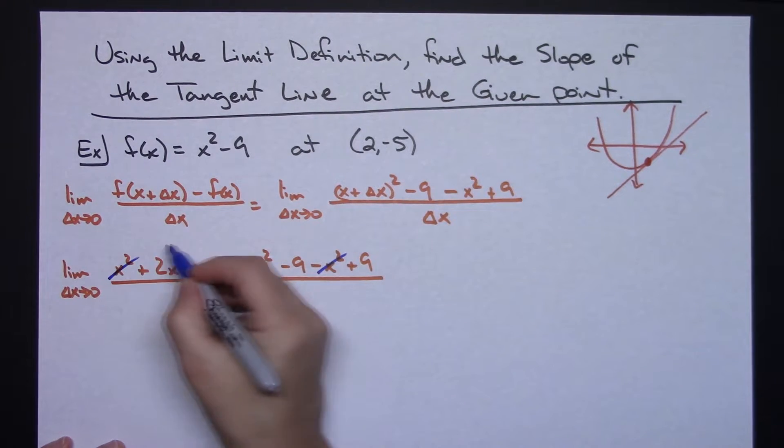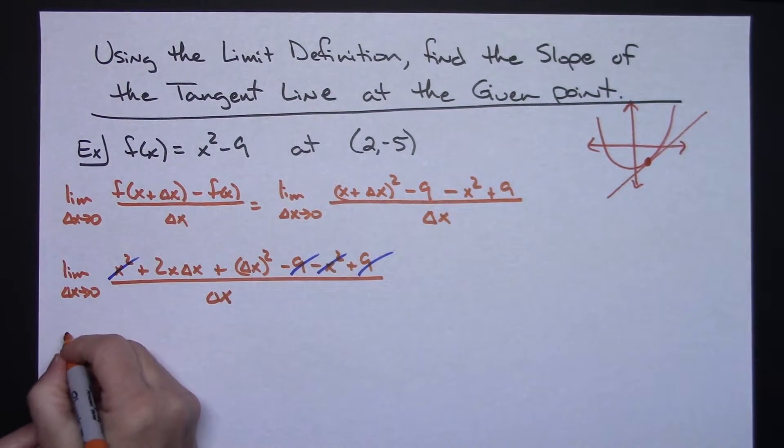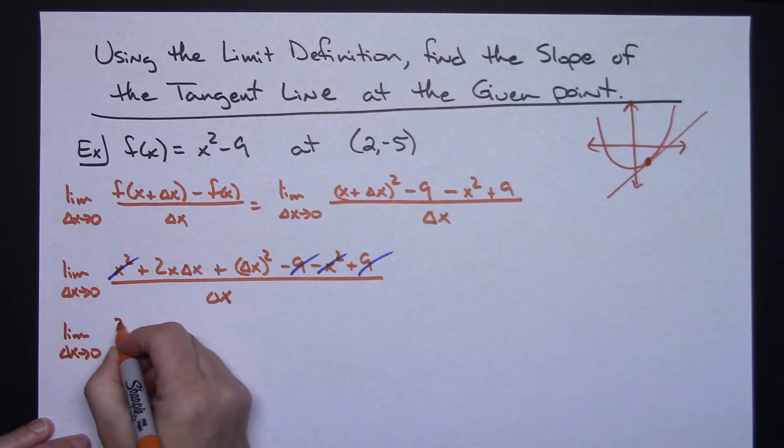Now we can do some crossing out. I've got a minus X squared and an X squared, I've got a minus 9 and a 9, and I think that's all that crosses out.